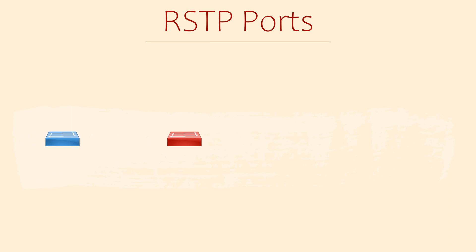When it comes to ports, some things change and some things remain the same. The root port, for example, is the same. There is still one root port per switch and it still points out the best path to the root bridge. The only exception, of course, is the root bridge itself, which does not have any root ports. All ports on the root bridge are always designated ports.